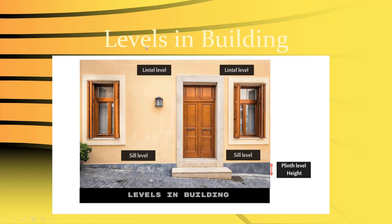There are several levels in a building. The surface we stand on is the floor level. The ground surface is the ground level. Below the window, the sill is present — that is the sill level. The lintel is placed above the window opening — that is the lintel level. And at the top is the story height or slab level.